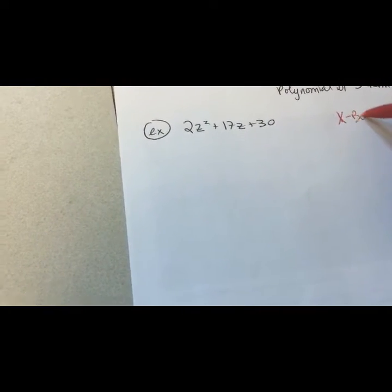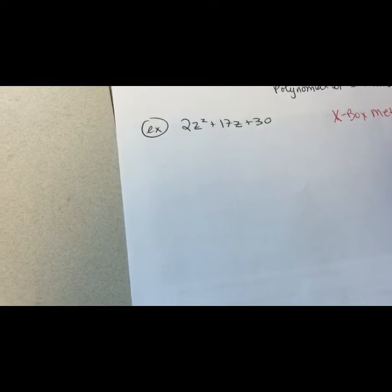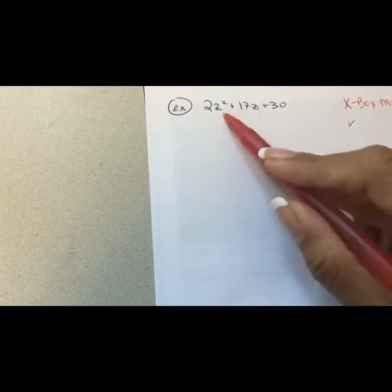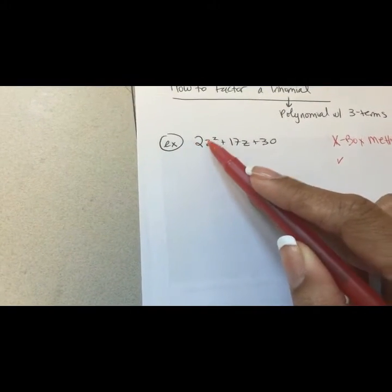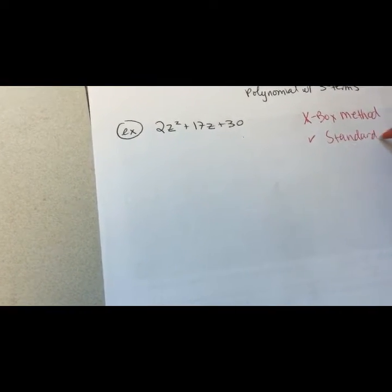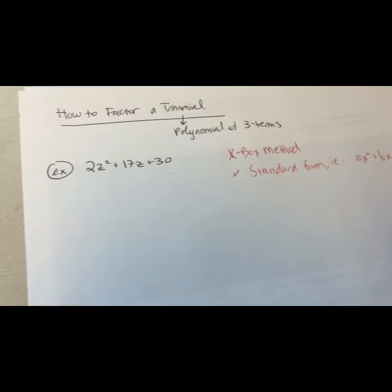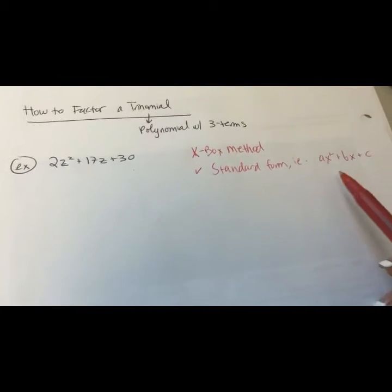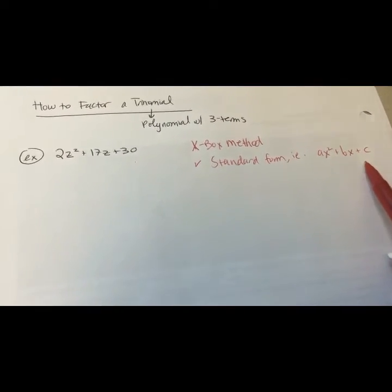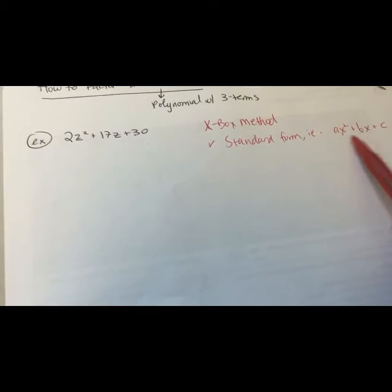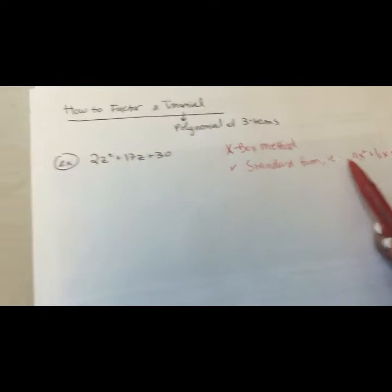The method I use is called the Xbox method. First, make sure your polynomial is written in standard form, meaning the highest exponent goes first and it goes down to its lowest — so from x-squared down to x down to the constant. In ALEKS our homework is always written in standard form, but in case you get a textbook or another teacher writes it differently, make sure it's in standard form.